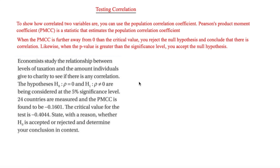In this video we are looking at testing correlation. To show how correlated two variables are, you can use the population correlation coefficient. Pearson's product moment coefficient, the PMCC, is a statistic that estimates the population correlation coefficient. When the PMCC is further away from zero than the critical value, you reject the null hypothesis, which means you conclude there is correlation.